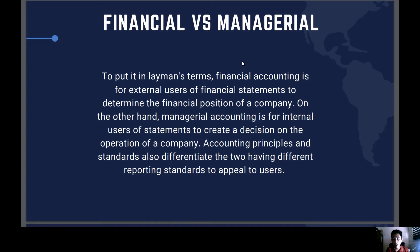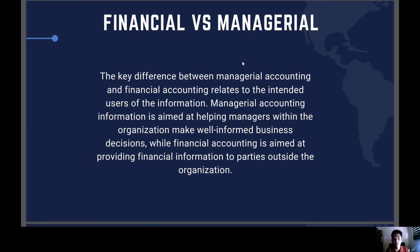The standards are adjusted to fit where they are focused — financial accounting for external users, managerial accounting for internal users — so that the reports are more understandable to the respective users. The key difference between managerial accounting and financial accounting relates to the intended users of the information. Managerial accounting information is aimed at helping managers within the organization make well-informed business decisions.